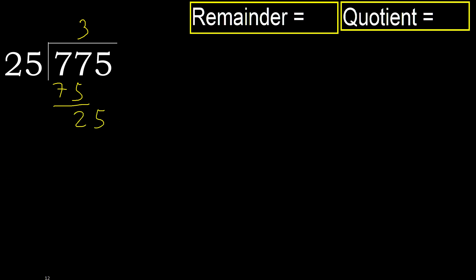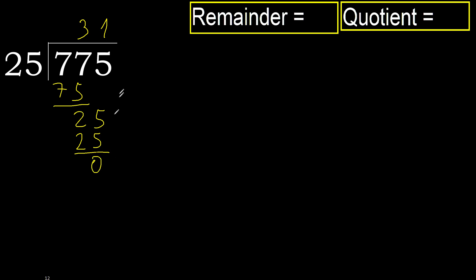25, 75 multiplied by 1 is 75, which is not greater. Subtract: 75 minus 75 is 0. Next — that is not a number, therefore finish.